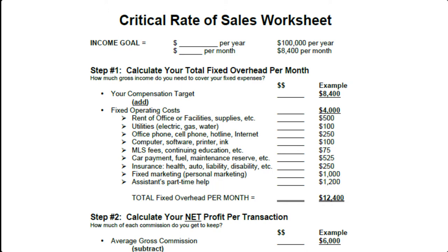And if you have $4,000 in overhead every month — and that could be higher or lower depending on what your expenses are — that means that your fixed overhead for this month would be $12,400. It's what you want to net plus your expenses. So that's step one.